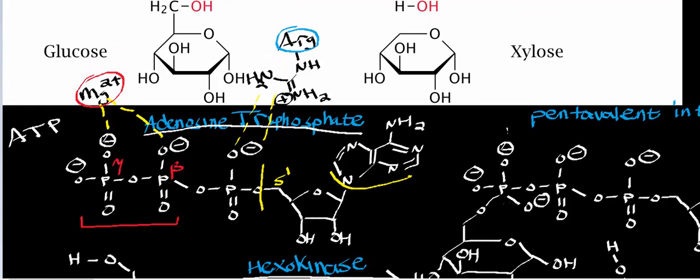There's also a positively charged residue in the active site called an arginine residue. The guanidinium group of arginine has a positive charge and interacts electrostatically with the alpha phosphate, which carries a negative charge. These two residues combined facilitate ATP binding to the enzyme and allow the reaction to take place very quickly. Hexokinase is one of the faster enzymes in nature, and part of that speed comes from facilitating ATP binding through these electrostatic interactions.